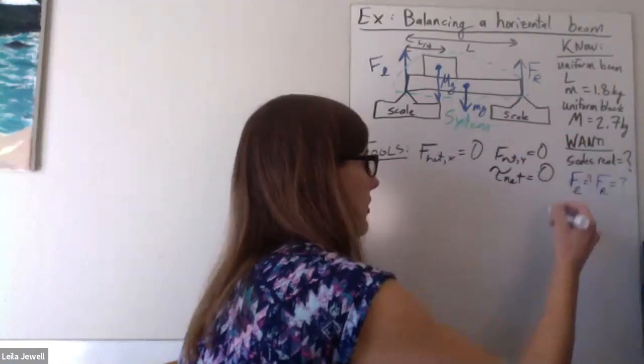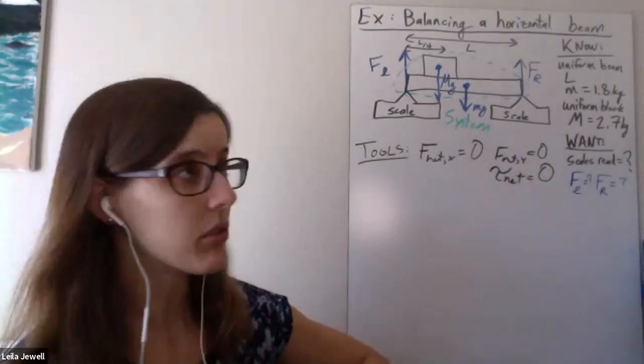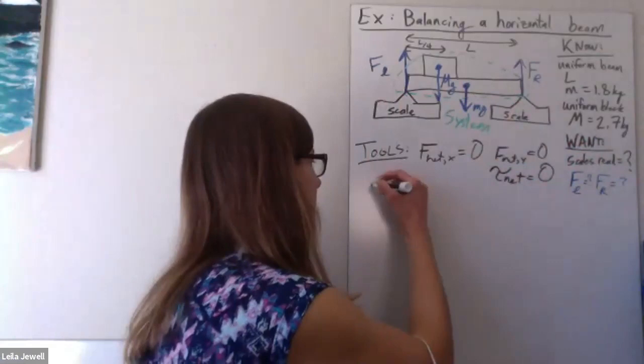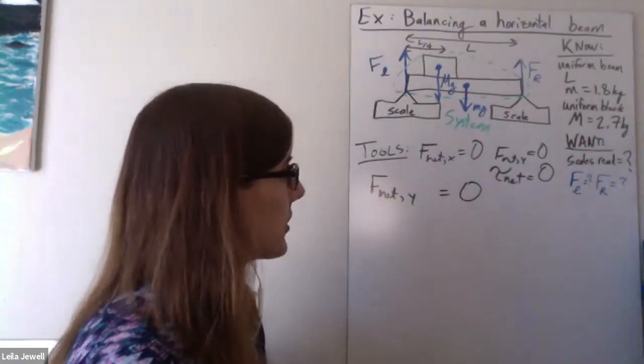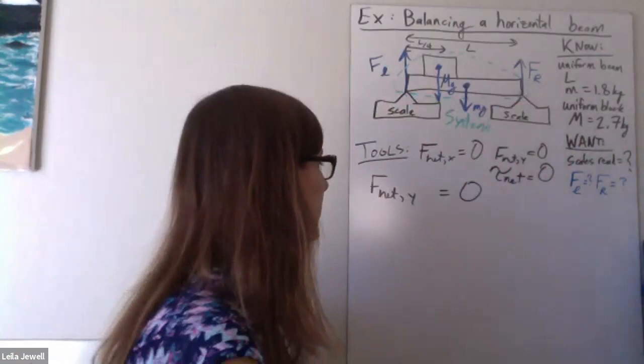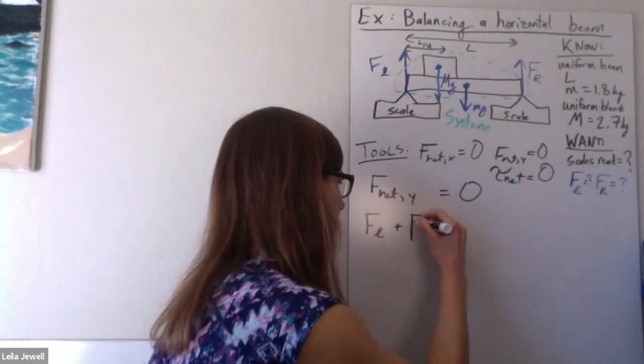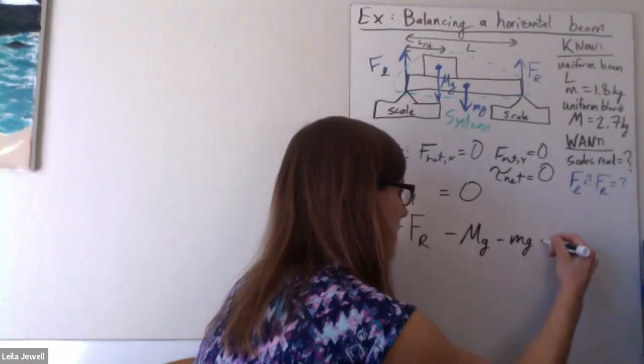And I recommend starting with the balance of forces because they're the simplest ones to throw up there. We notice all these forces are vertical, so I'm not going to worry about the x direction. But I will look at the net force in the y direction and how those forces come to zero. And for this, all I have to do is figure out which forces are going up, which ones are going down. So I'd have F left plus F right minus big mg minus little mg have to come out to zero.